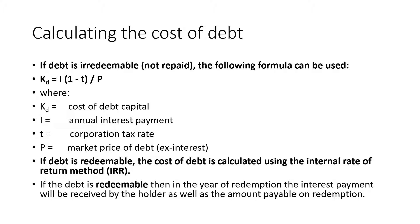Calculating the cost of debt: if debt is irredeemable — not repaid — the following formula can be used: kd = i(1 − t) / P, where kd is the cost of debt capital, i is the annual interest payment, t is the corporation tax rate, and P is the market price of the debt.